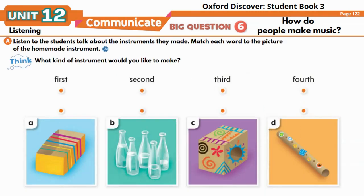Page 122, Listening A: Listen to students talk about the instruments they made and match each word to the picture of the homemade instrument. Our first instrument is a drum called a cajon. We cut a big round hole in one side of a strong box, then decorated the sides with markers. I sit on it and tap the sides with my hands.